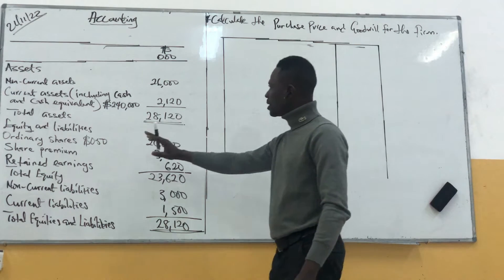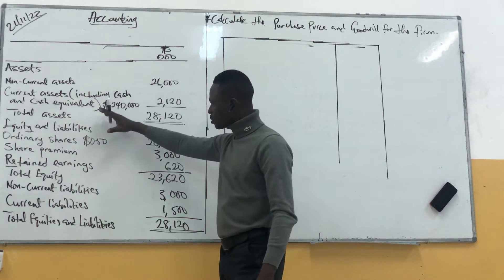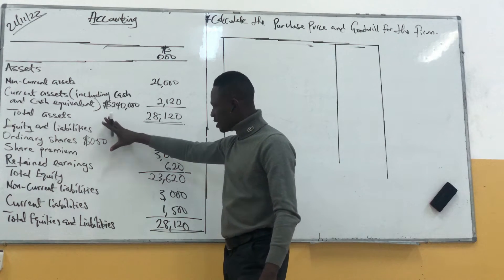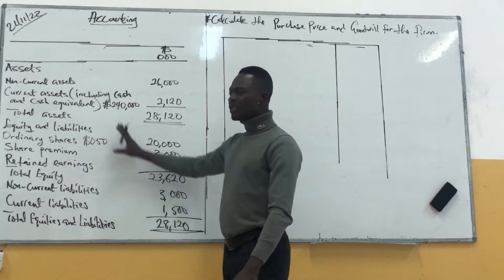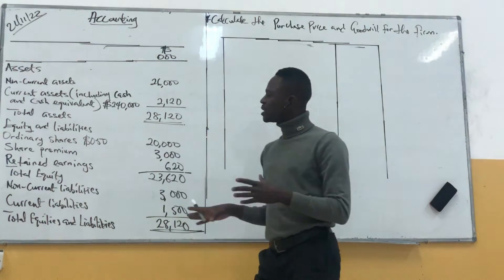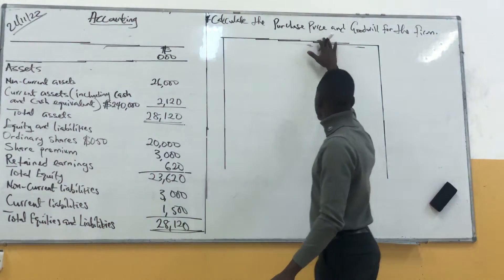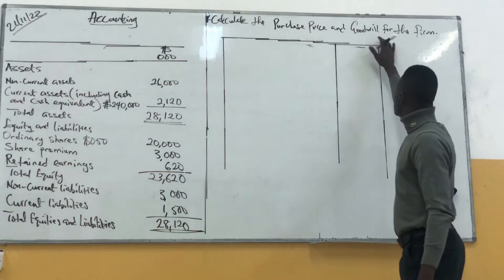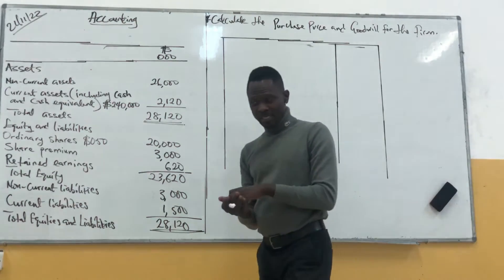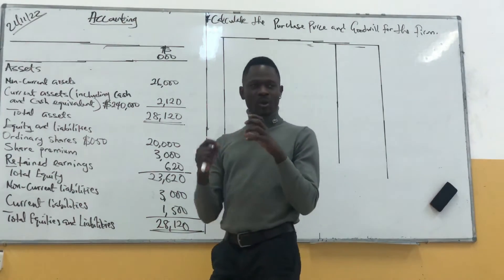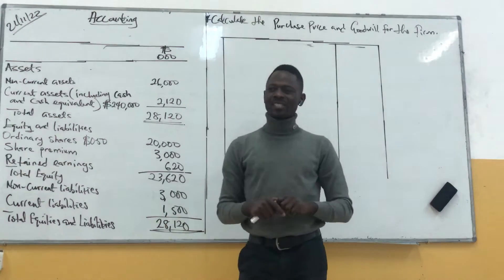It is a company with tax assets and total assets between $1,000 and $1,000. So with these items, what we are supposed to do is to find the purchase price and goodwill for the firm. So how do we get the purchase price? Our purchase price — we have to get it through the net assets.